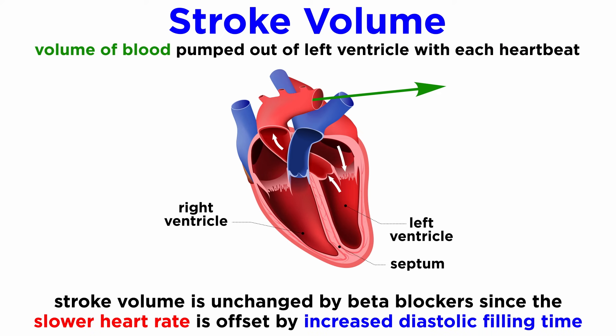Generally, stroke volume is unchanged by beta blockers, since slowing the heart rate through beta-1 adrenoceptor antagonism increases diastolic filling time, which by the Frank-Starling law maintains stroke volume.